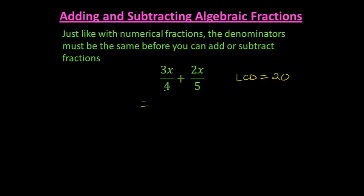So the first one, 3x over 4, in order to get a denominator of 20, I have to multiply 4 by 5. So that means I must also multiply my numerator by 5.